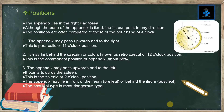Positions: although the base of the appendix is fixed, the tip can point in any direction. The positions are often compared to those of the hour hand of a clock. The appendix may pass upward to the right — this is the paracolic or 11 o'clock position. It may lie behind the cecum or colon, known as the retrocecal or 12 o'clock position, which is the commonest position, accounting for about 65%.